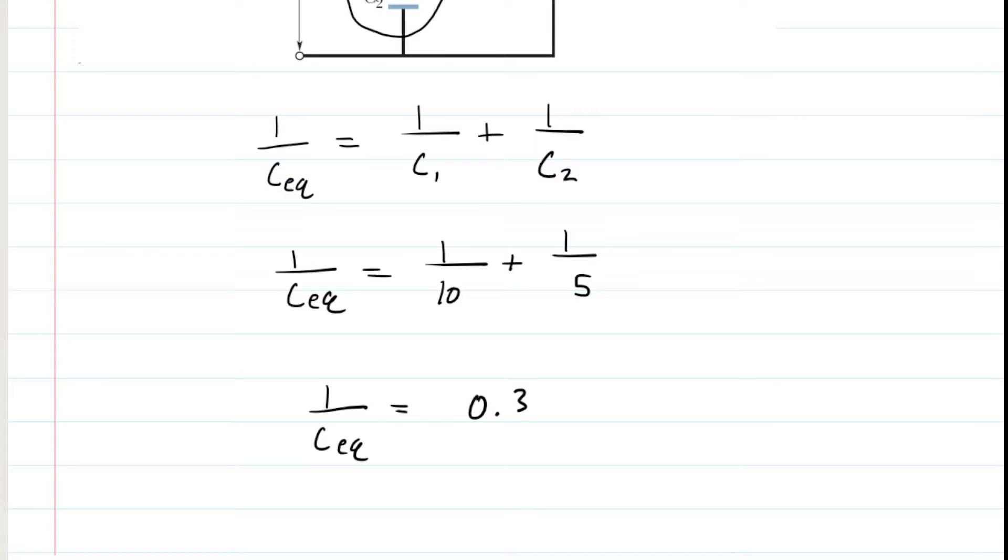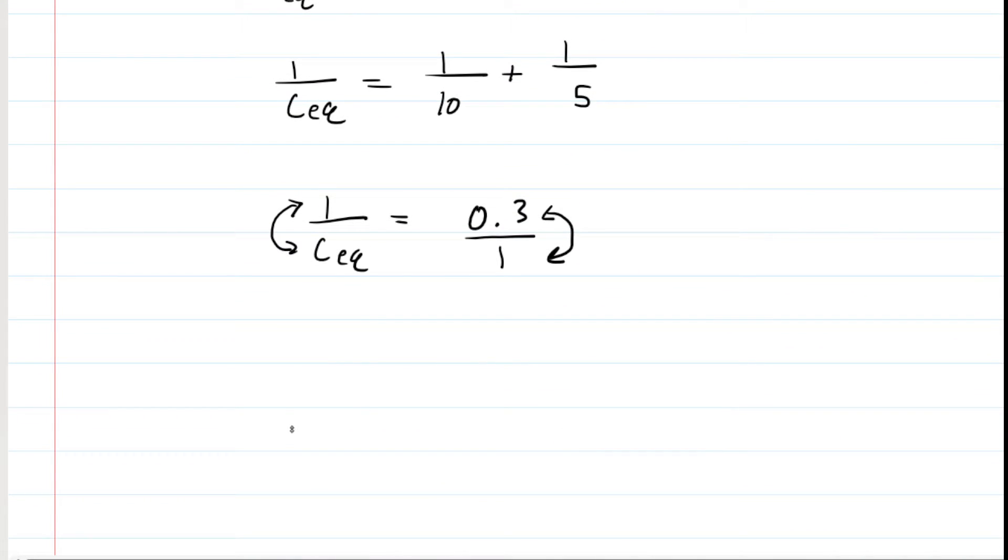Now to solve for the equivalent capacitance, you can perform the following trick. We put the 0.3 over 1, and then reciprocate the left and right-hand sides of the equation, basically flipping them upside down. When you do that on the left side, you'll get C_eq over 1, which is just C_eq. And 1 divided by 0.3 gives you 3.3 repeating, and the unit of capacitance is still in microfarads.